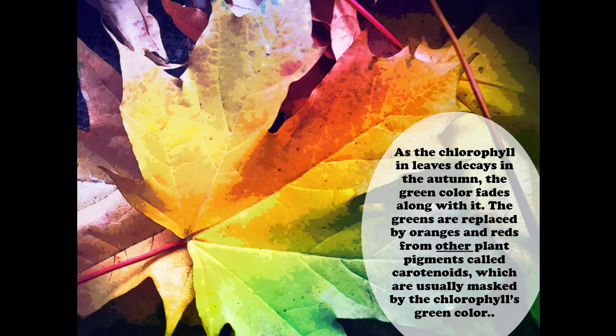As the chlorophyll in leaves decays in the autumn, the green color fades along with it. The greens are then replaced by oranges and reds from other plant pigments called carotenoids, which are usually masked by the chlorophyll's green color.